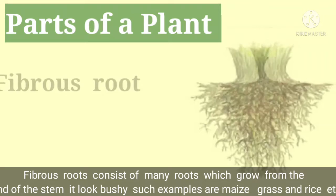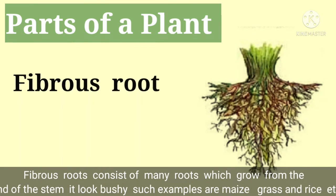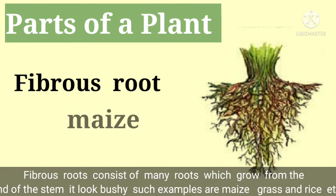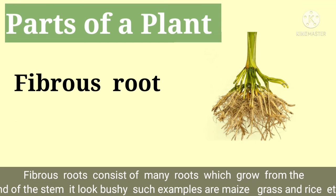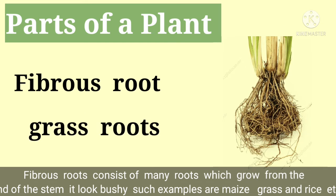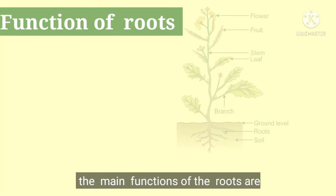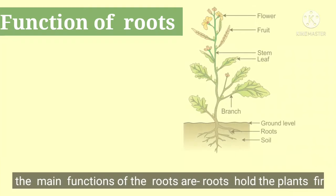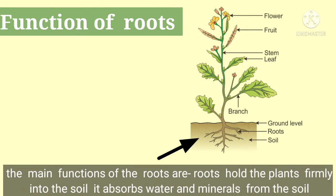Fibrous roots consist of many roots which grow from the end of the stem. Now, the main function of roots is that roots anchor the plant.